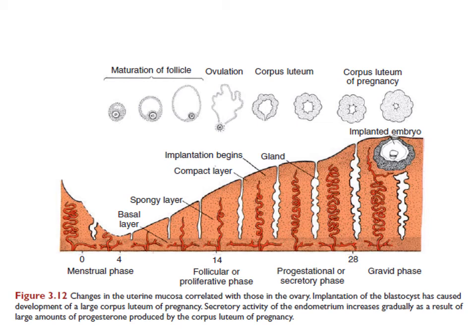From puberty to menopause, the endometrium will undergo changes in a cycle of approximately 28 days, all under hormonal control by the ovaries, so changes in the uterine mucosa are correlated with those in the ovary. During the menstrual cycle, the uterine endometrium passes through three stages: the menstrual phase, the follicular or proliferative phase, and the progestational or secretory phase. During pregnancy, a fourth phase called the gravid phase is added.